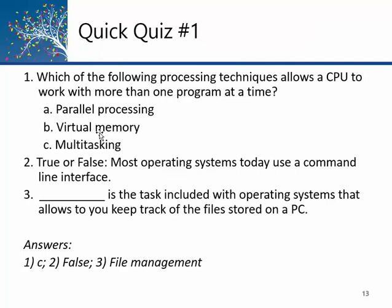Quick quiz: which processing technique allows a CPU to run 72 tasks on a computer with only one to eight CPUs? The answer is multitasking — letter C. True or false: most operating systems today use a command-line interface. That was true in the 1980s when most machines used DOS, but today graphical user interfaces — GUIs — are the most popular. Ten years from now we'll probably have something even better. File management is one of the things the operating system does, along with memory management and CPU management.